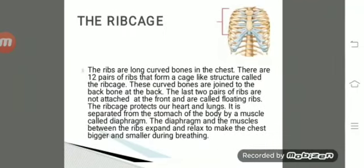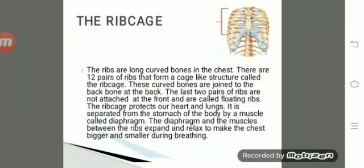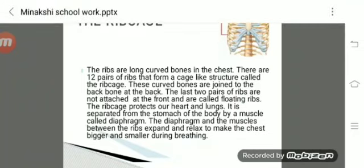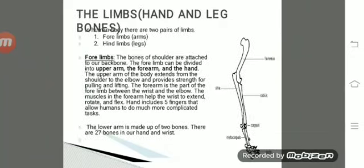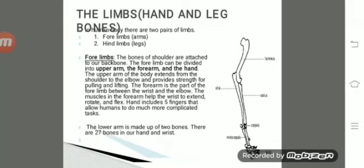The rib cage protects our lungs and heart. The ribs are long curved bones in the chest. There are 12 pairs of ribs that form a cage-like structure. These curved bones are joined to the backbone at the back. The last two pairs of ribs are not attached at the front and are called floating ribs. The rib cage is separated from the stomach by a muscle called the diaphragm, which expands and relaxes during breathing.